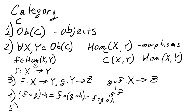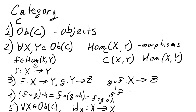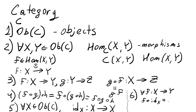Another thing that categories have is identities. For any object X, there is a distinguished morphism called id_X, sometimes just id, from X to itself. This is called the identity. The identity morphism acts as a unity for compositions. For all F from X to Y, F∘id_X equals F, which equals id_Y∘F.